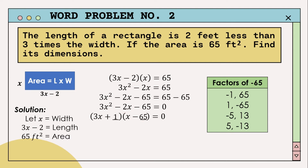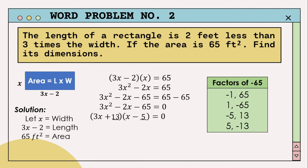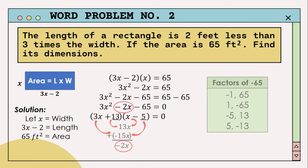Let us try 1 and negative 65. The product of the inner terms is x, and the product of the outer terms is negative 195x. Their sum is negative 194x — still not correct. Now let's try negative 5 and 13. Plugging these in: 13 times x is 13x, and 3x times negative 5 is negative 15x. Adding: 13x plus negative 15x equals negative 2x. Since negative 2x equals the second term of our trinomial, this is the correct pair of factors.